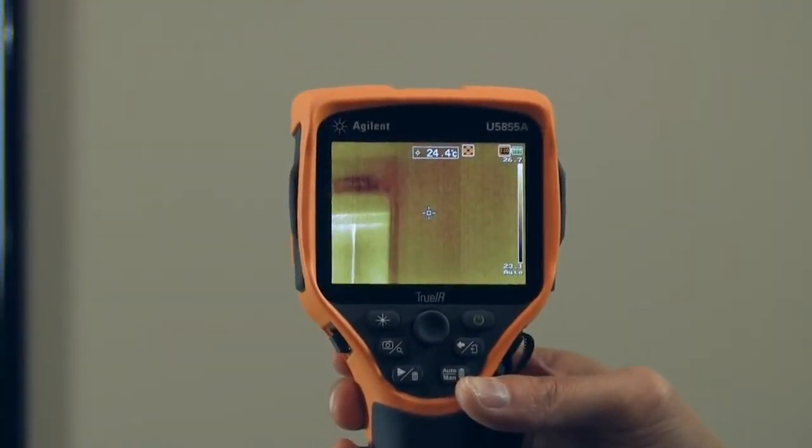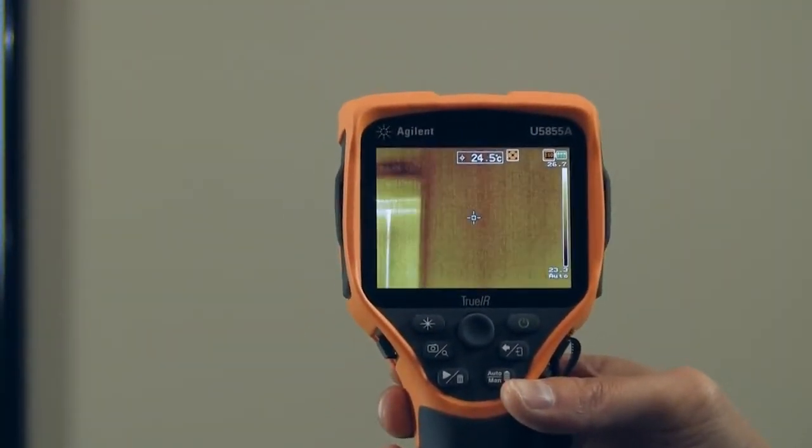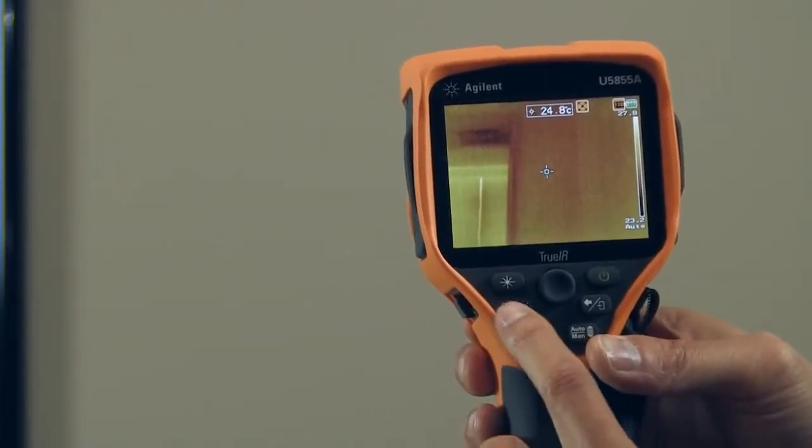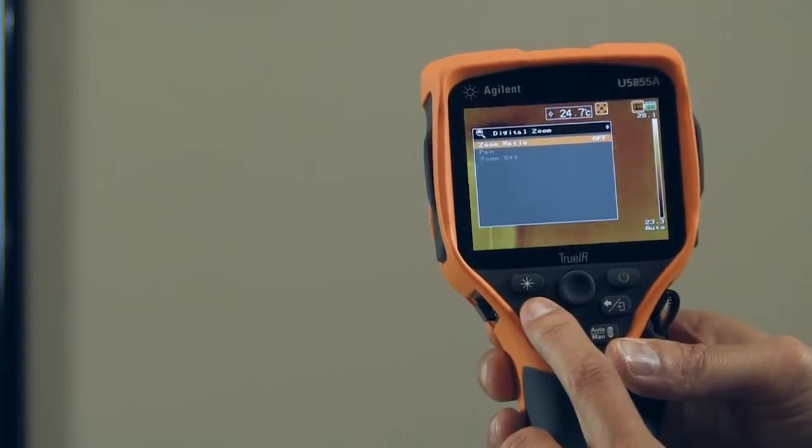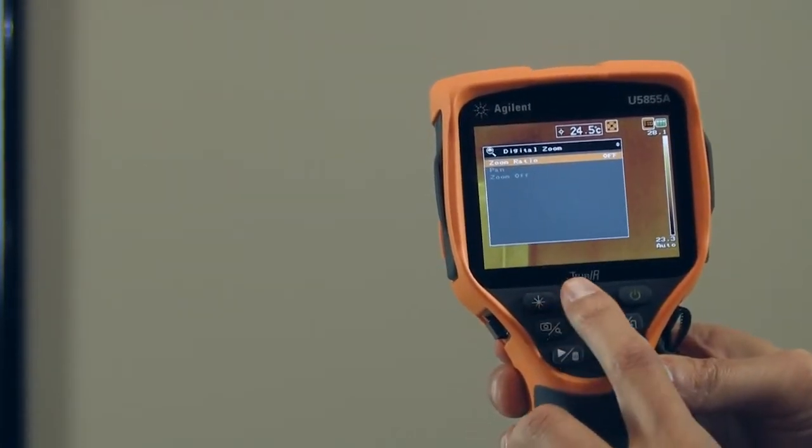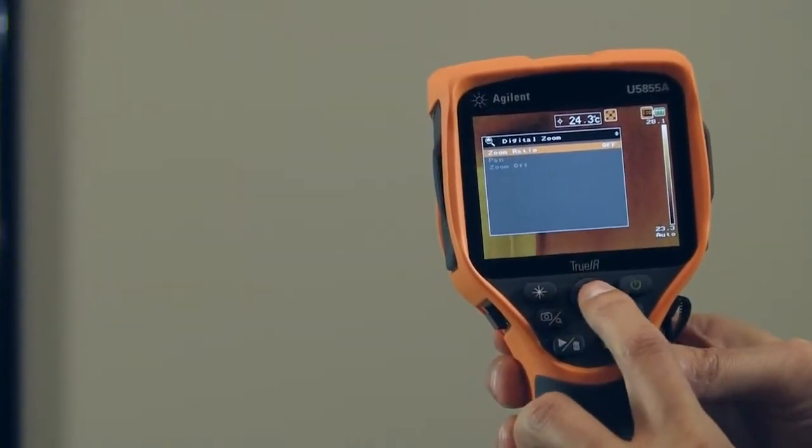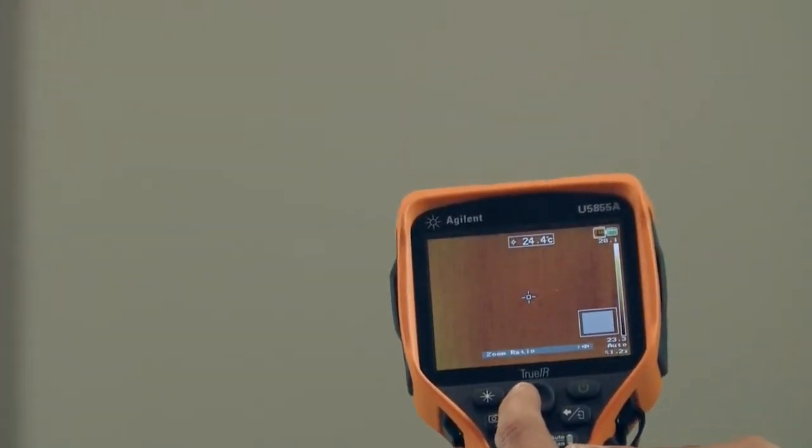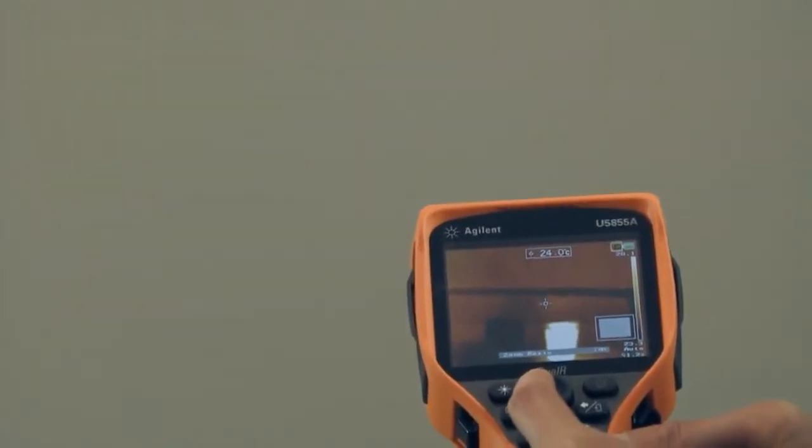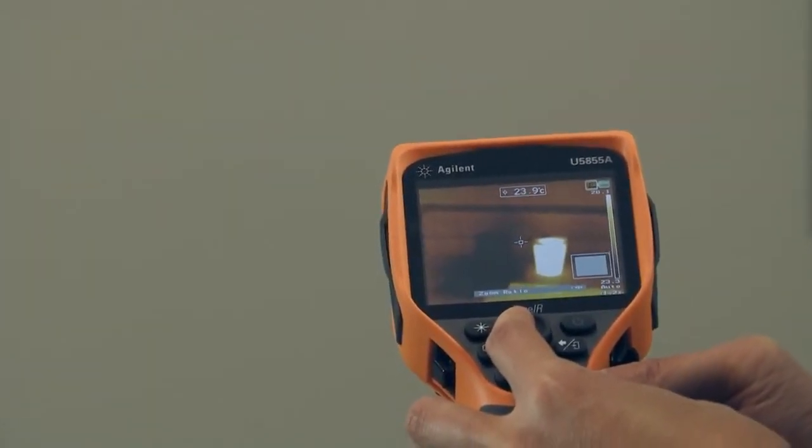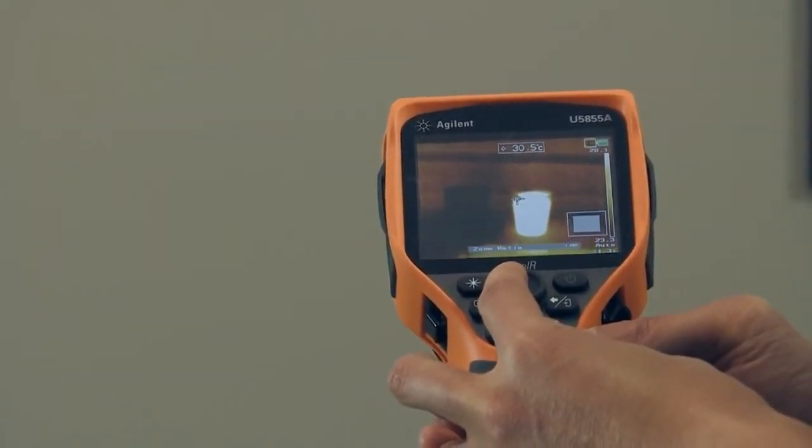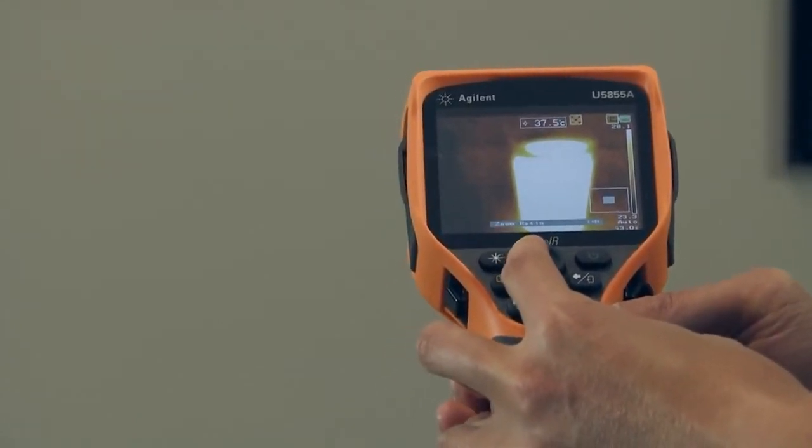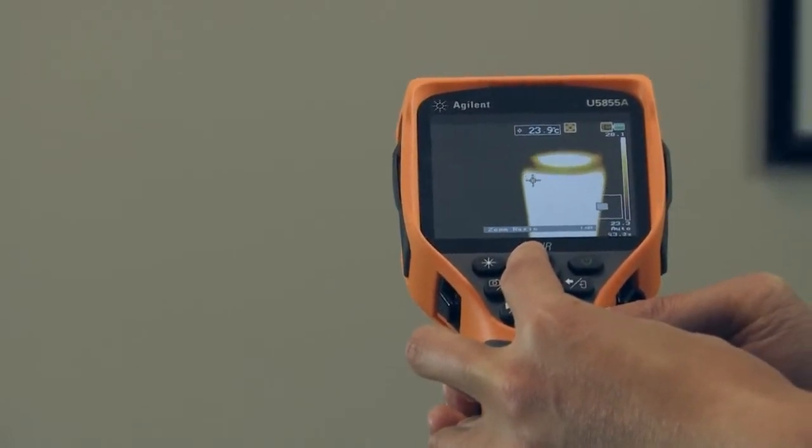In addition to that another useful feature for some thermal cameras is the ability to zoom. So for this camera I'm just going to hold down this camera button again, bring up my zoom menu. And I'm actually going to zoom in just by pressing this right button. So we look down at our cups of water again. We can actually zoom in just on that hot water even though I'm not moving my feet.